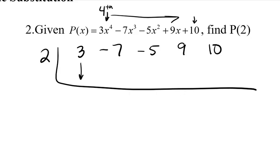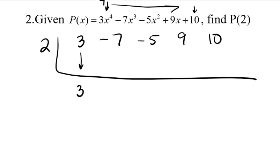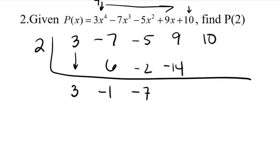Now, again, bring down that 3. So that's going to be the first number we'll write down in that space. Then 2 times 3, of course, is 6. When you add them up, you get negative 1. Multiplying 2 times negative 1, we get negative 2. The sum of negative 5 and negative 2 is negative 7. When you multiply 2 times negative 7, you get negative 14. The sum of 9 and negative 14 is negative 5. When you multiply 2 times negative 5, this gives us negative 10.